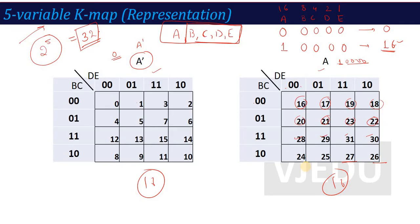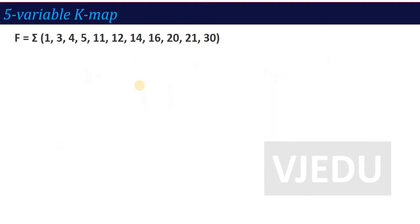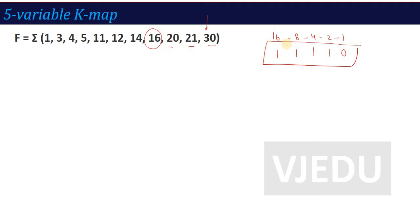So the first thing we always read in K-map solving is the representation — this is the way of representation of your 5-variable K-map. Now if I start with a question so our understanding is proper. The function is given as a summation, i.e., minterms are available. The minterms are: 1, 3, 4, 5, 11, 12, 14, 16, 20, 21, 30. The last minterm is 30. If you convert 30 to binary, you get 11110, which means I require at least 5 bits — confirming this is a function of 5 variables.